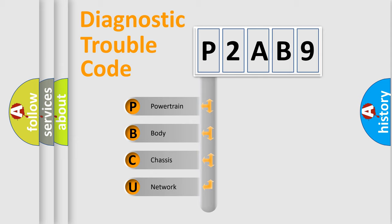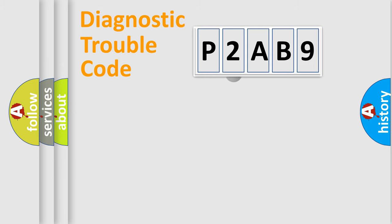We divide the electric system of automobile into four basic units: Powertrain, Body, Chassis, and Network. This distribution is defined in the first character code.